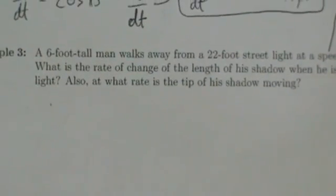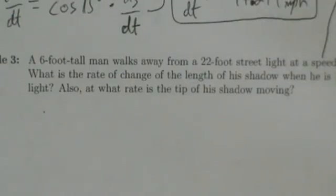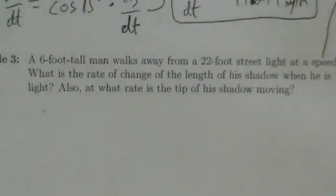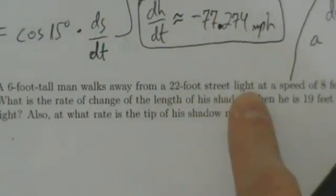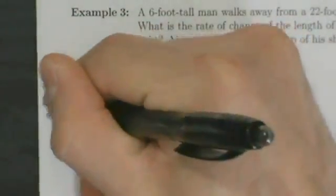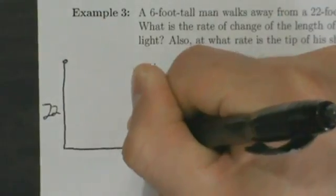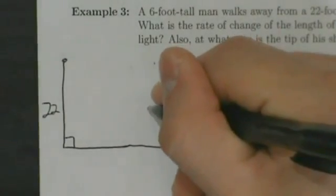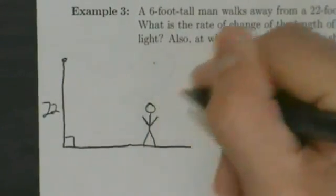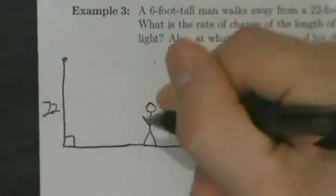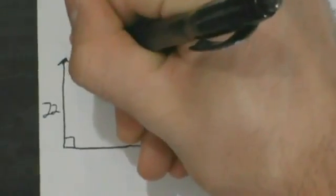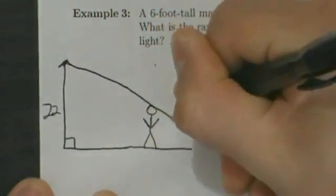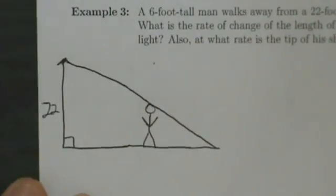So there are two things we're being asked to find. We go to our general process: step one, draw and label the picture. We have a 22-foot street light, and a six-foot tall man walking away from it. Let's put our street light over here — it's 22 feet — and we'll assume it makes a 90-degree angle with the ground.